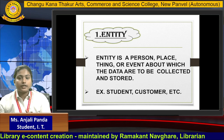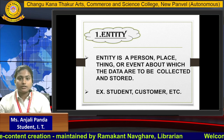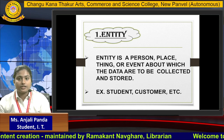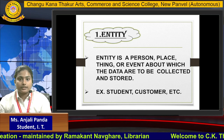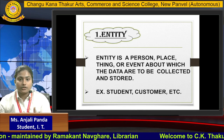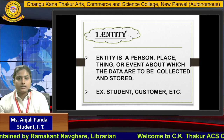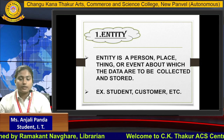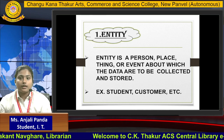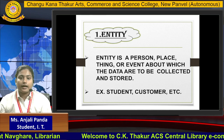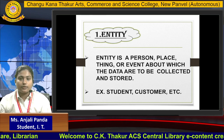Student, student ID, student class, student division — these are the entities of the student. Next is customer: customer ID, customer name, customer phone number — these are the entities of the customer.